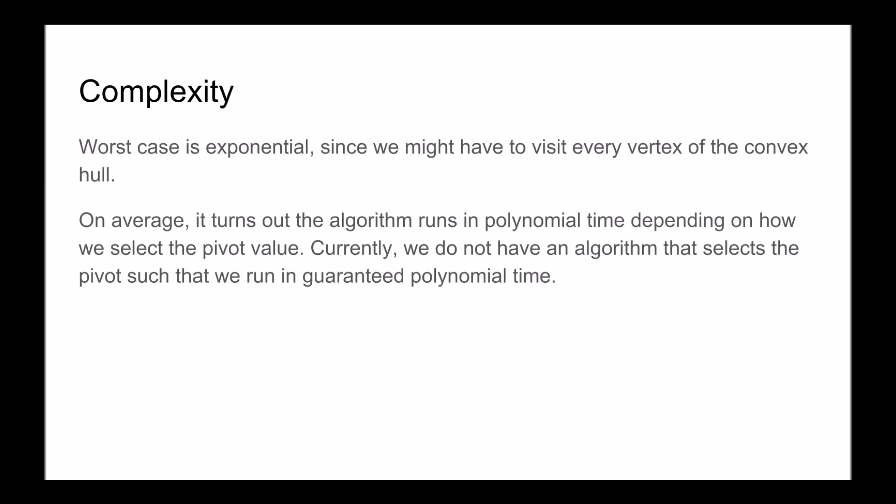The worst-case complexity of the algorithm is exponential, since we might have to visit every vertex of the convex hull, and there are specific examples where you must visit 2 to the n vertices. On average, however, the algorithm runs in polynomial time, depending on how we select our pivot value. Currently we do not have an algorithm that selects the pivot such that we run in guaranteed polynomial time, but there are several algorithms that give an average polynomial time case.